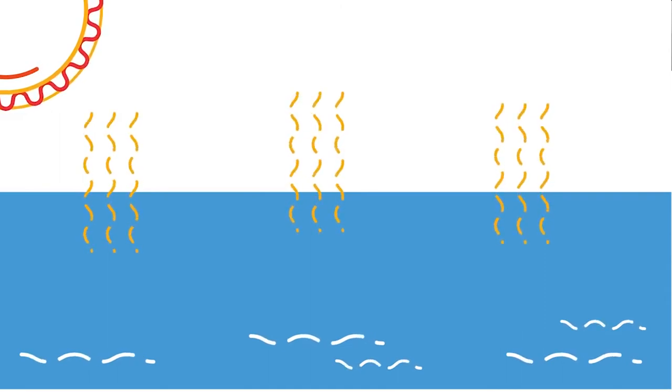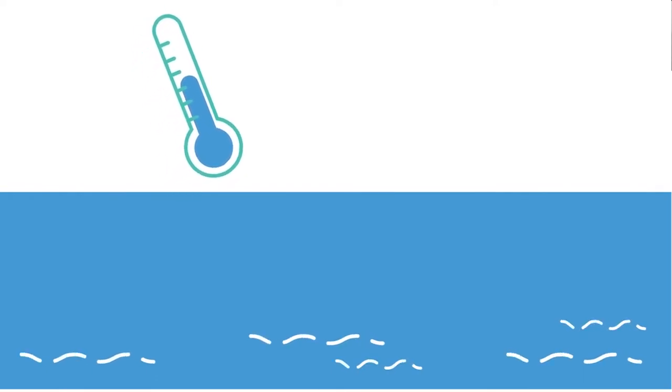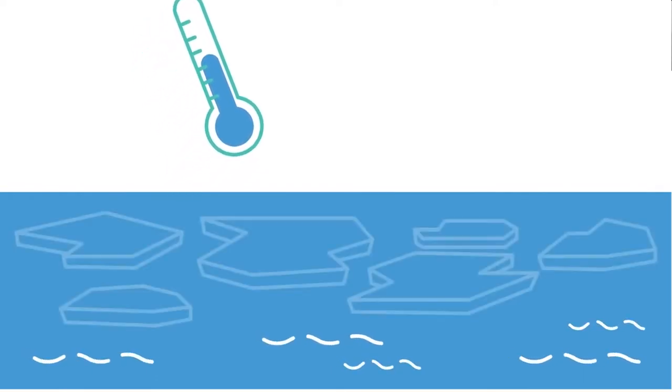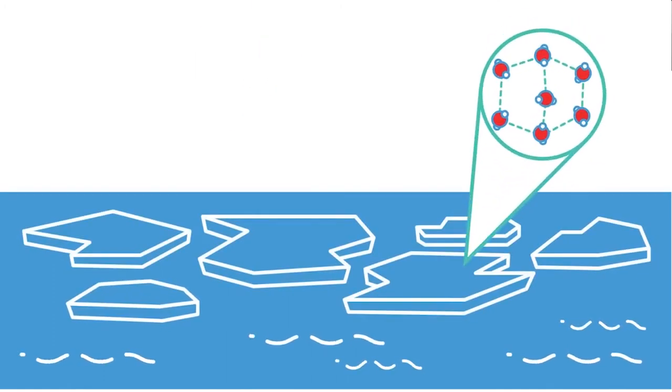But in the winter, the air temperatures are colder and so seawater freezes and the ice starts to form again. There is less heat energy within the ice and so more bonds can form, holding it together as solid ice.